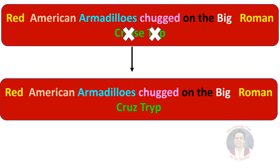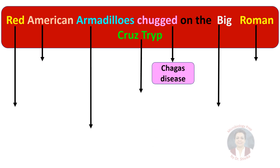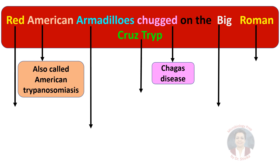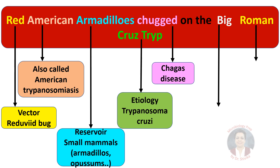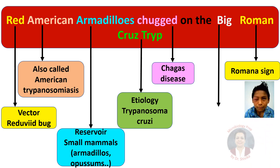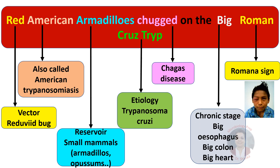Let's see what we learn from this mnemonic. Chagas disease is also called American trypanosomiasis. The causative agent is Trypanosoma cruzi. The vector is the reduviid bug. Reservoirs are small mammals like armadillos and opossums. Romana's sign is the periorbital swelling seen in people infected through the conjunctiva. In the chronic stage, the patient has megaesophagus, megacolon, and dilated cardiomyopathy.